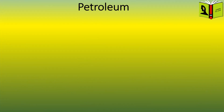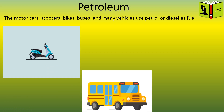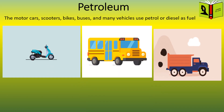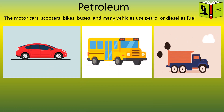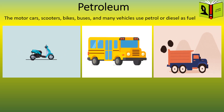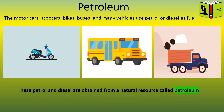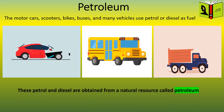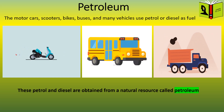Petroleum: motor cars, scooters, bikes, buses, and many vehicles use petrol or diesel as fuel. These petrol and diesel are obtained from a natural resource called petroleum.